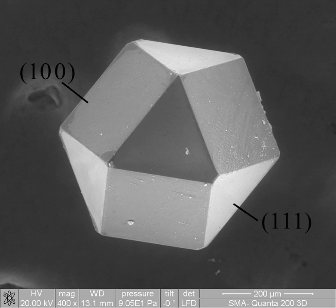Microstructure is defined as the structure of a prepared surface or thin foil of material as revealed by a microscope above 25 times magnification. It deals with objects from 100 nanometers to a few cm. The microstructure of a material, which can be broadly classified into metallic, polymeric, ceramic and composite, can strongly influence physical properties such as strength, toughness, ductility, hardness, corrosion resistance, high-low temperature behavior, wear resistance, and so on.